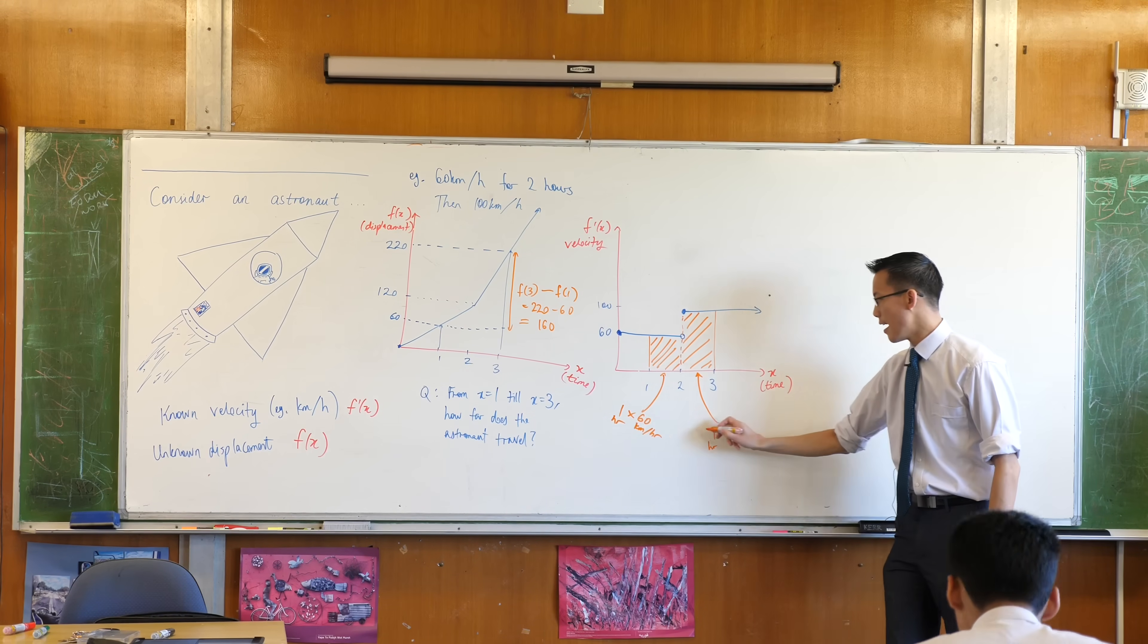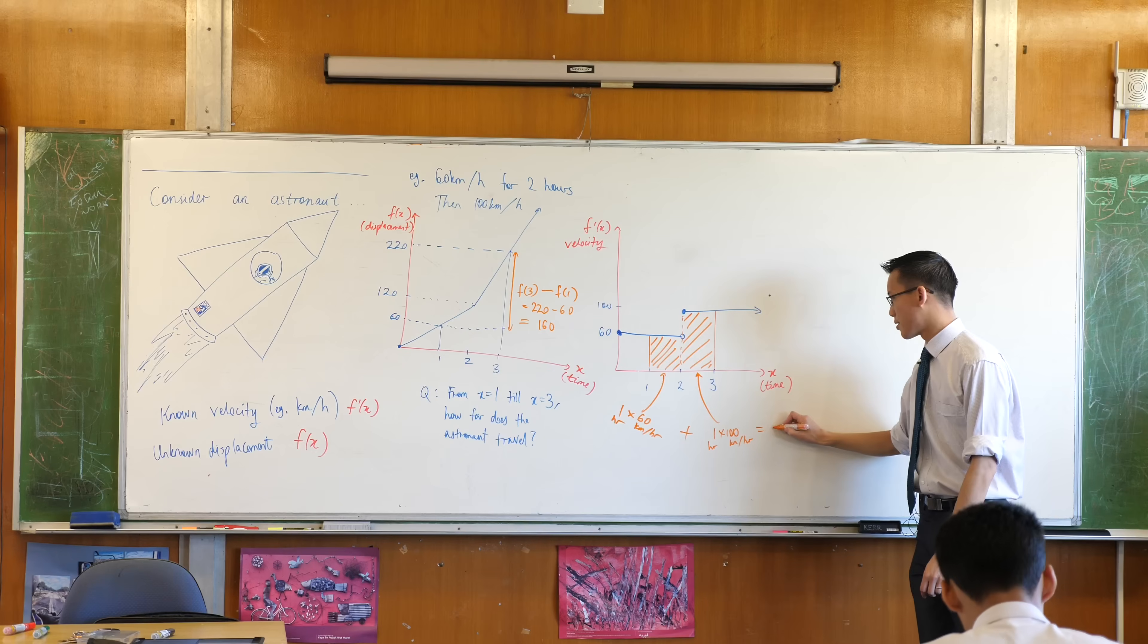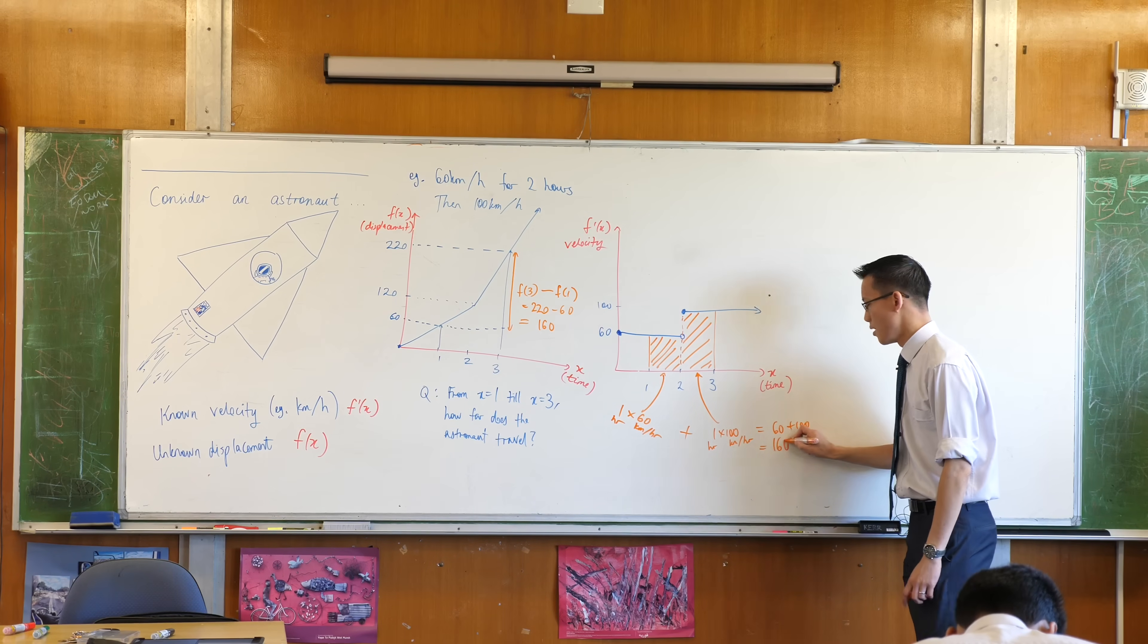So these two represent two parts of the journey. You do one, you do the other, and then because you do them one after the other, you add them. That gives you a total distance: 60 plus 100, which is 160.